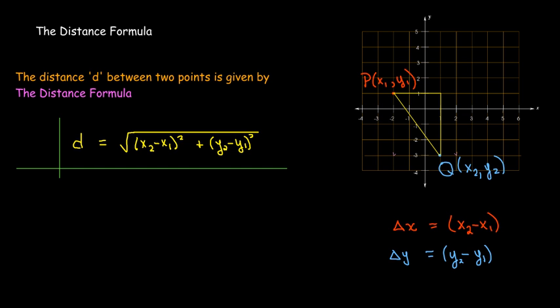The distance d between two points (x₁, y₁) and (x₂, y₂) is: take the difference in the x-coordinates and square it, take the difference in the y-coordinates and square it, add those two together, and then take the square root.